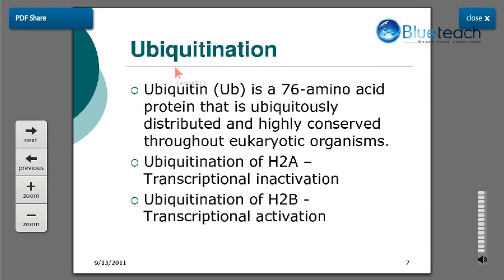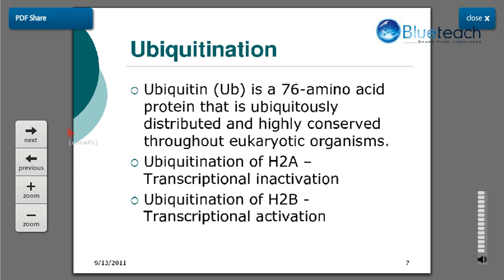The next modification is ubiquitination. Ubiquitin is a 76 amino acid protein that is ubiquitously distributed and highly conserved throughout eukaryotic organisms. When this ubiquitin molecule gets attached to histone proteins, it shows different changes: ubiquitination of H2A protein leads to transcriptional inactivation — that is, transcription levels are suppressed — whereas ubiquitination of H2B protein leads to transcriptional activation, meaning more transcription and more protein synthesis takes place. So some modifications enhance and some suppress transcription.